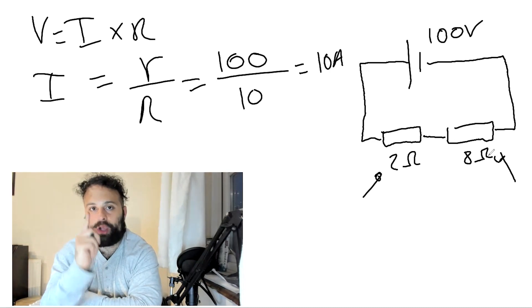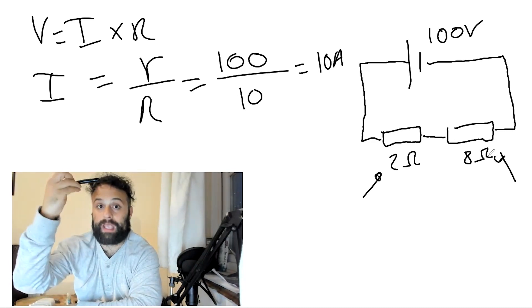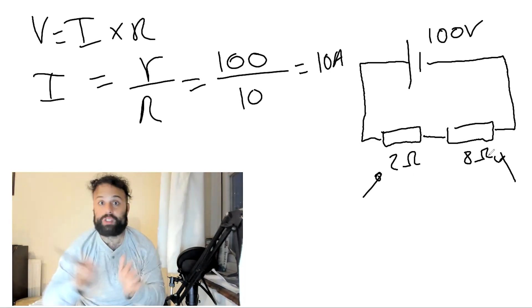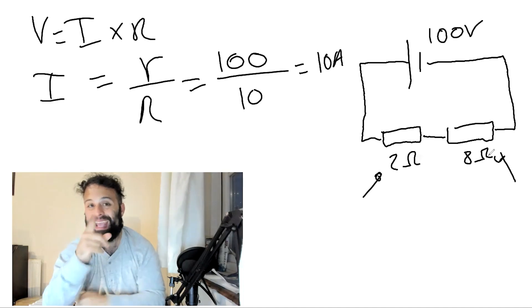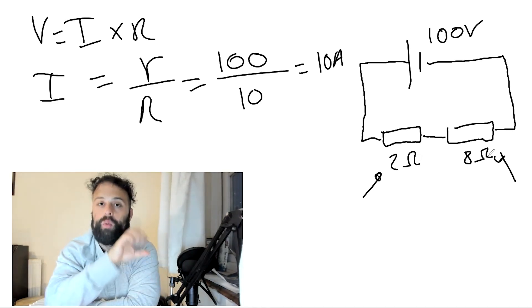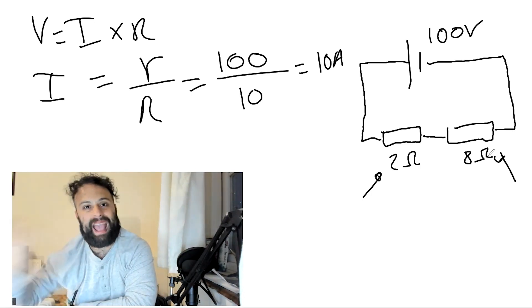So voltage in a series circuit is not the same everywhere. But voltage in a parallel circuit will be the same in this section, down here. Everywhere in a parallel circuit, it will be 10 volts. But in here, the voltage differs. So the 2 ohm resistor will have a different voltage than the 8 ohm resistor.